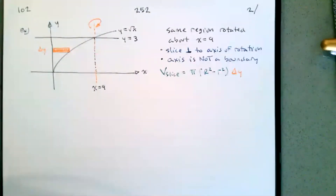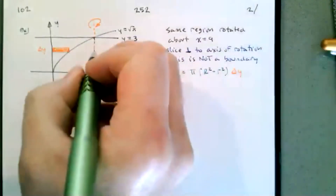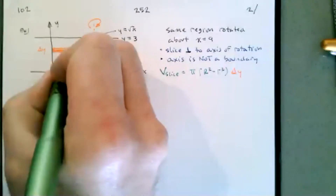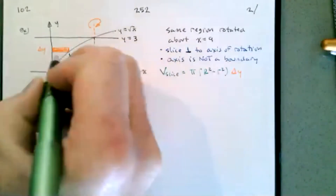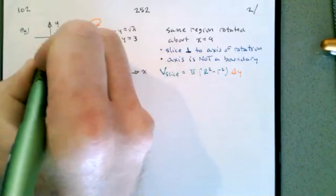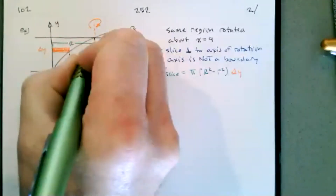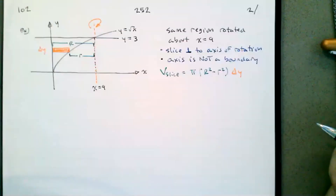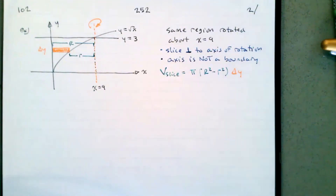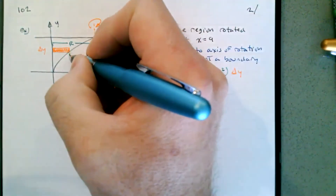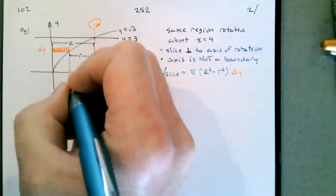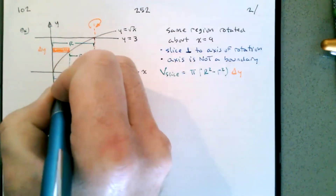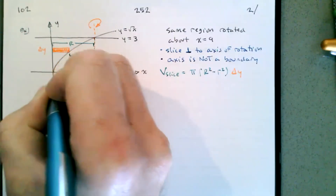We need to write R and r in terms of y. Since R and r are horizontal but y is vertical, we'll write R and r in terms of x first, then use the function to write x in terms of y. We label the point where the slice intersects the graph with coordinates x and y.